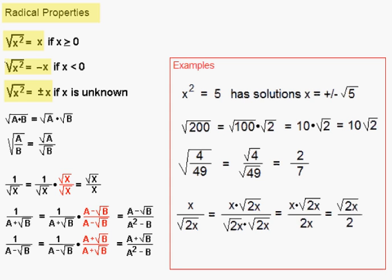Some basic rules for radicals: one is the product rule. The square root of a times b equals the square root of a times the square root of b. That rule also applies for roots other than square roots — it applies to third roots, fourth roots, and so on. Likewise, we have the quotient rule: the square root of a over b is equal to the square root of a divided by the square root of b, and that rule applies to other types of roots as well.